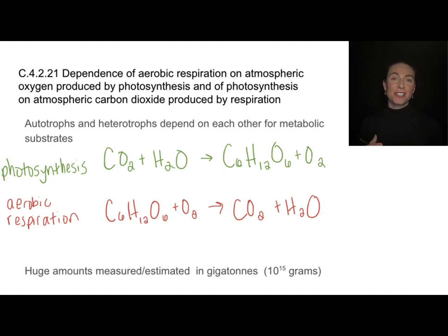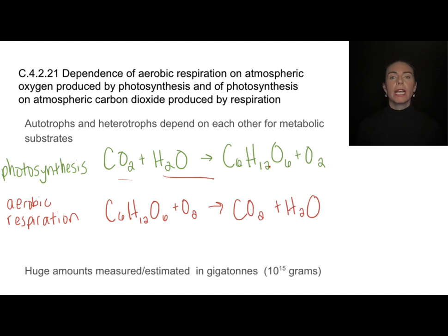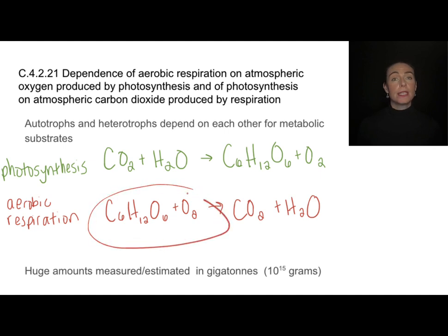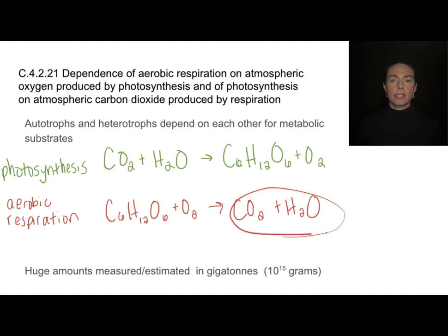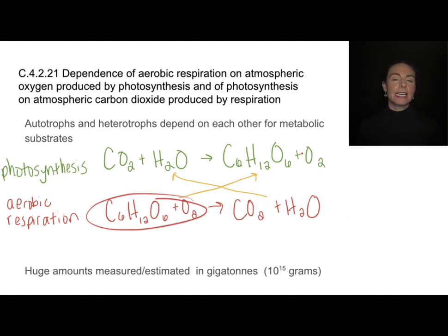Theme C: interaction and interdependence. Let's not be surprised that we're asked to recognize that photosynthesis and aerobic respiration are part of the cycle and also part of the interdependence of individual organisms. Here I have the photosynthesis equation: carbon dioxide and water yielding glucose and oxygen. The products of photosynthesis are the reactants for aerobic respiration — in respiration we're using that glucose and oxygen, and the byproducts are carbon dioxide and water. So the products of one happen to be the reactants of another, giving us this cool cycle of dependence. Autotrophs and heterotrophs depend on each other for these metabolic substrates.